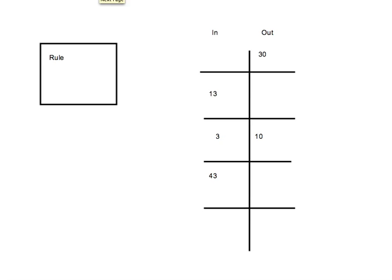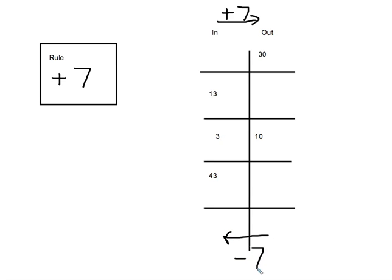Now sometimes with your function machines, they're not actually going to give you the rule. But you can still solve it if you can find an in and an out that are both given. Right here I have both the in and the out. I know I'm going from a small to a big, so I must be adding — I'm getting bigger. I just need to figure out how much I'm adding. 3 to 10 is only adding 7. So I know that any time I follow my rule from in to out, I'm going to add 7. And any time I do the opposite and go from out to in, I'm actually going to minus 7. You can draw that right on your function machine to help you stay organized.